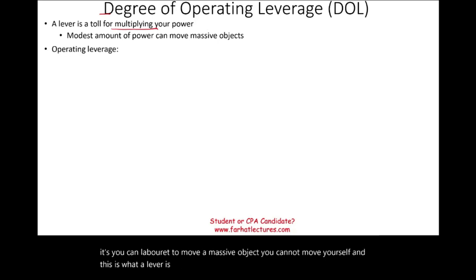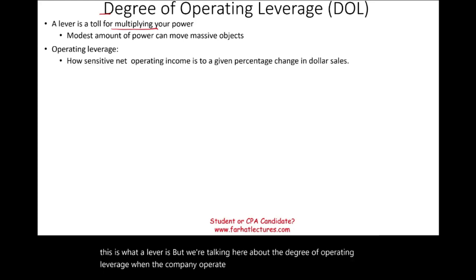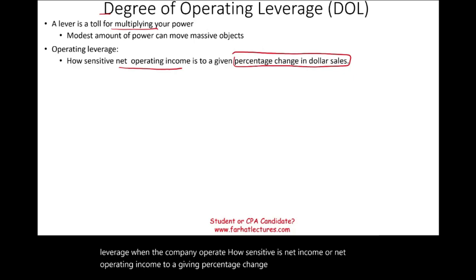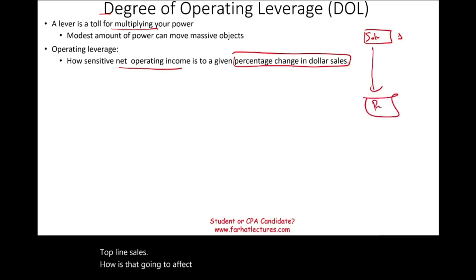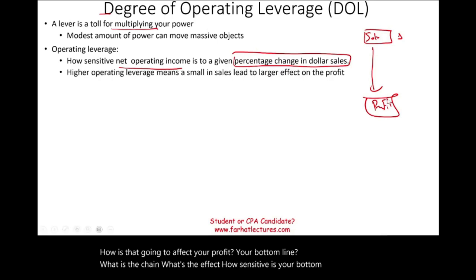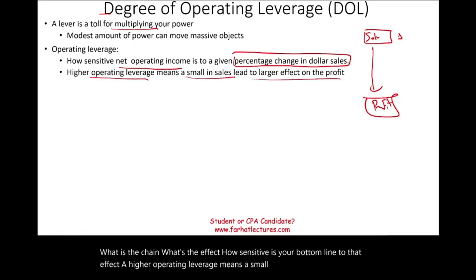But we're talking here about the degree of operating leverage. When the company operates, how sensitive is net income or net operating income to a given percentage change in sales? Simply put, when your top line sales changes, how is that going to affect your profit, your bottom line? A higher operating leverage means a small change would lead to a higher effect on profit.